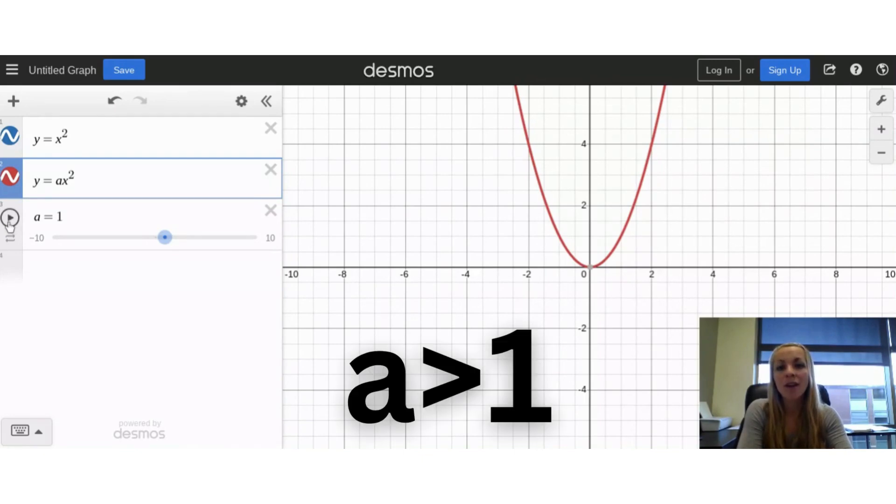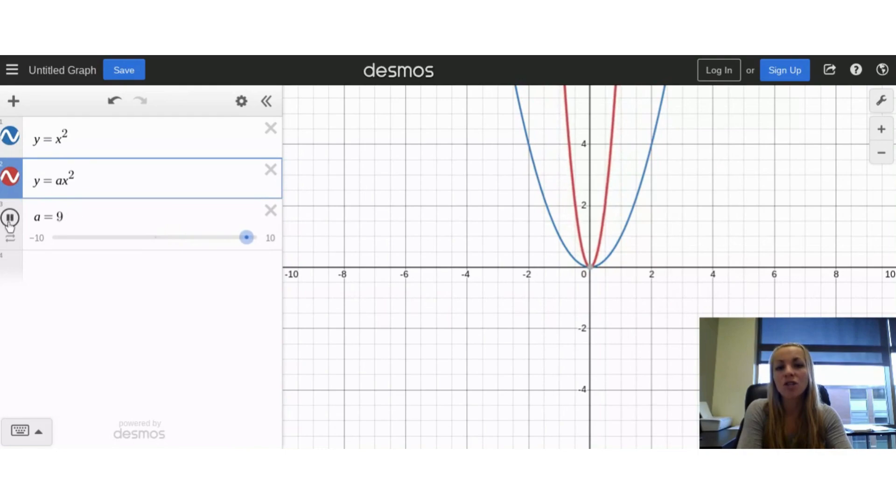When a is greater than 1, I see a vertical stretch. Think about our rubber band here. You're stretching it. It's becoming skinnier.